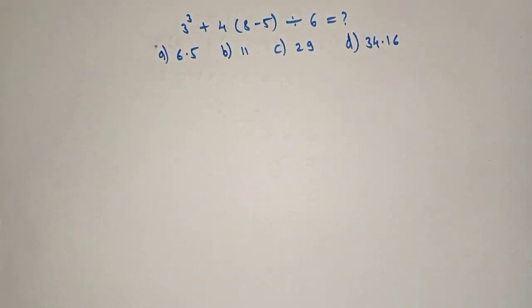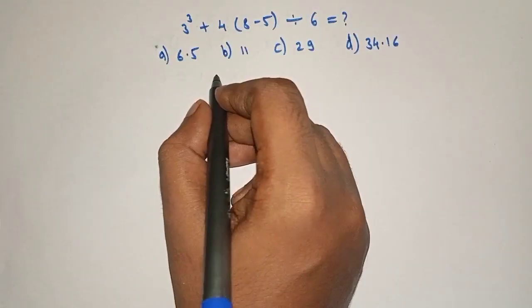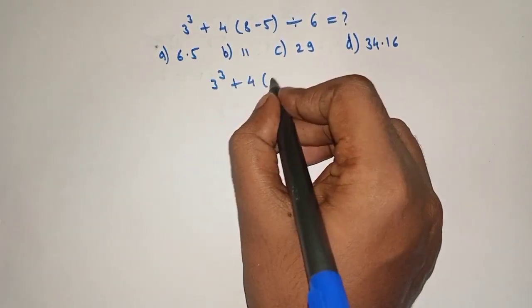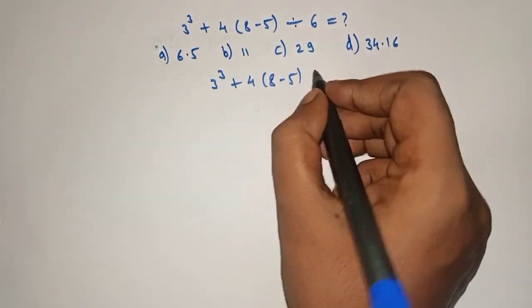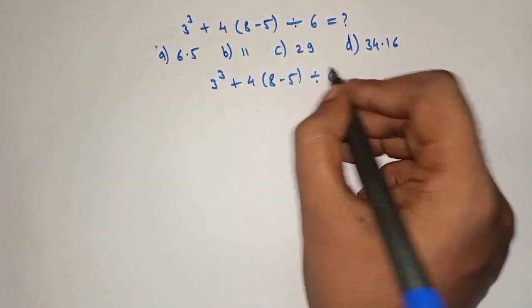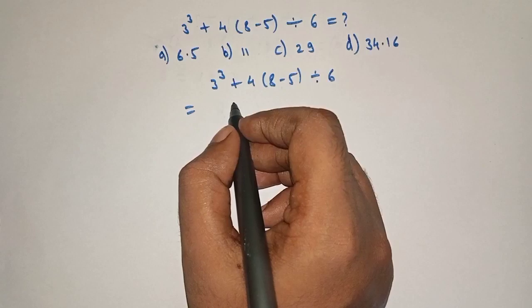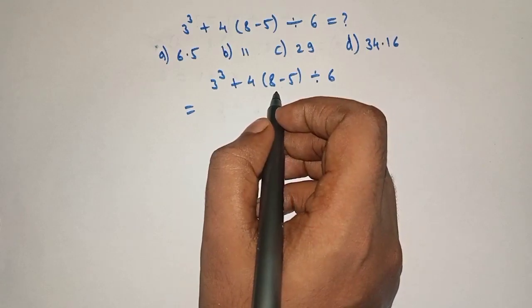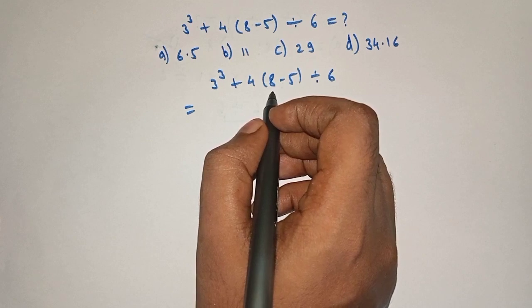So let's solve: 3 raised to 3 plus 4 into 8 minus 5 divided by 6 equals what? Here we will use BODMAS rule to solve this. So according to that, we have to first solve the bracket term.